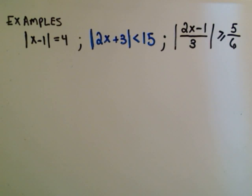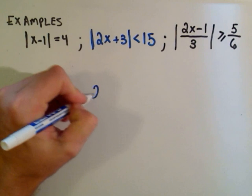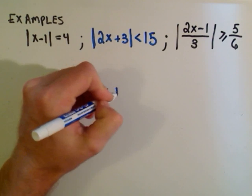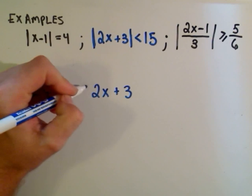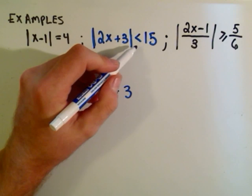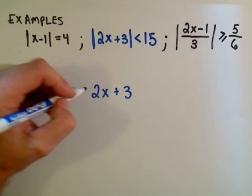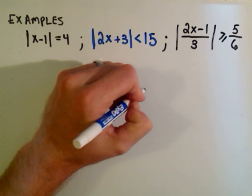The next one is 2x plus 3. The absolute value of that quantity is less than 15. In that case, all we have to do is remove the bars. If it's less than, you just make it the same thing.